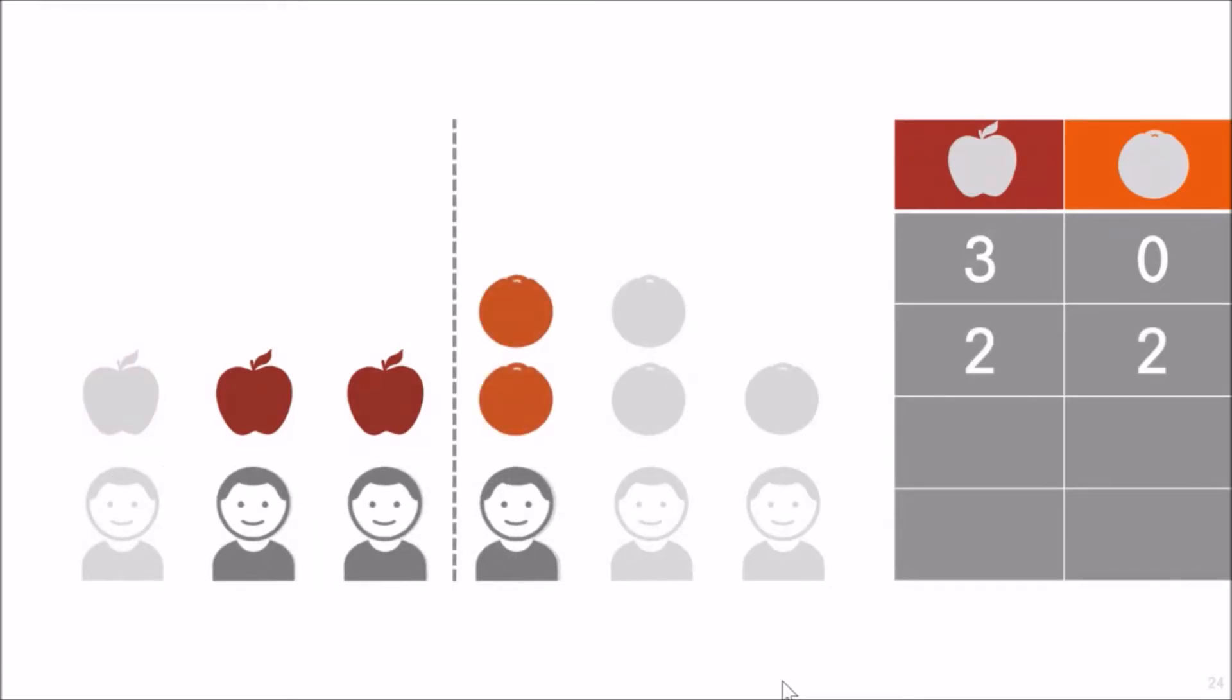It could have two units in apples and one in oranges, in which case it can produce two and two. So if it has one productive unit in apples and two in oranges, then it can produce one apple and four oranges.